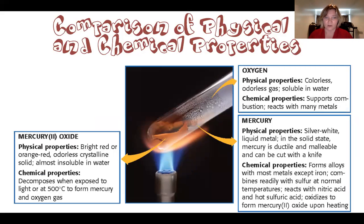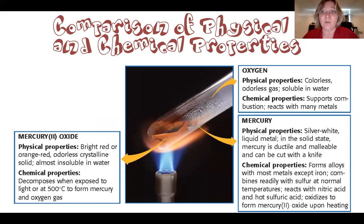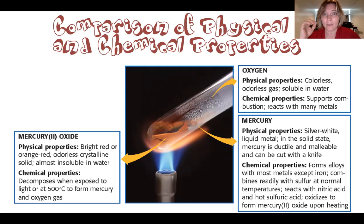Comparing chemical and physical properties: on the right-hand side are the reactants — oxygen and mercury — which will form mercury(II) oxide. For oxygen, physical properties include being a colorless, odorless gas, and being soluble in water. Colorless and odorless describe color and smell without changing the fact that it's oxygen. Soluble just means it's able to dissolve — if oxygen dissolves in water, it's still oxygen. Those are all physical properties; they don't change the identity of the substance.